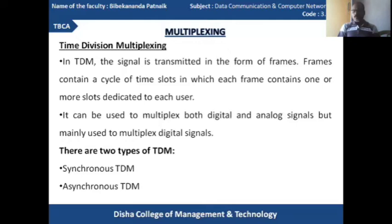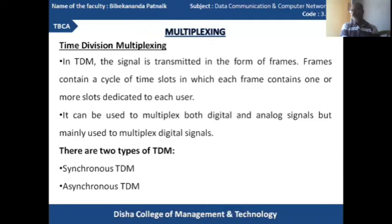TDM is part of digital multiplexing, so the data passed from sender to receiver depends completely on digital signals. Each frame contains a cycle of time slots, with one or more time slots dedicated to each device. It can be used to multiplex both digital and analog signals, but is mainly used for digital signals. There are two types of TDM: synchronous TDM and asynchronous TDM.